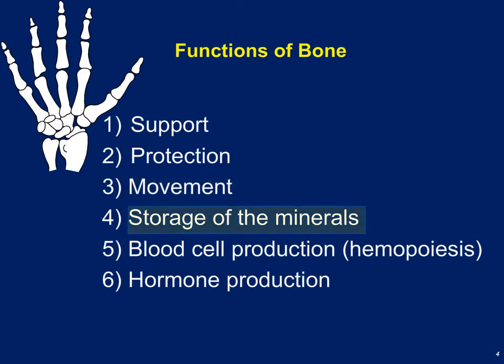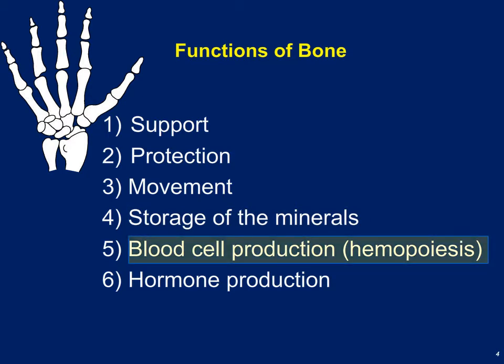Another important function of bone is the storage of minerals. Bone contains a lot of calcium, specifically calcium phosphate, which is important for bones but also for other processes in the body. We need adequate amounts of calcium for muscle contraction and also for blood clotting. If we don't have enough calcium in the bloodstream, we tend to go to our bones and remove that calcium. Another function is hemopoiesis or hematopoiesis — the production of blood cells. Bone marrow located in the ends of your long bones and within the spongy bone contains stem cells that produce red blood cells, white blood cells, and platelets.